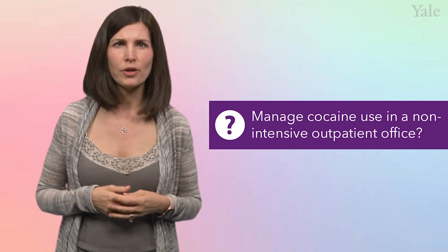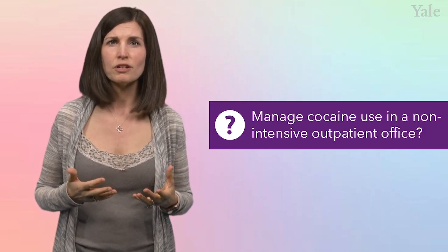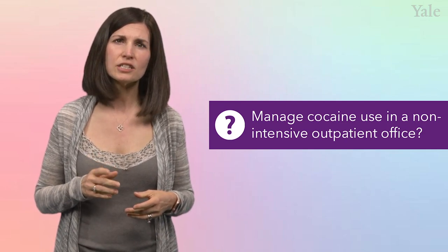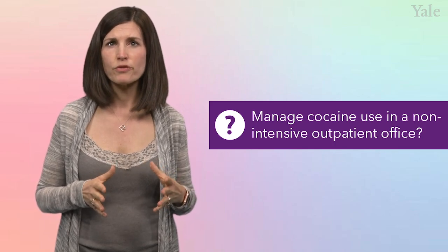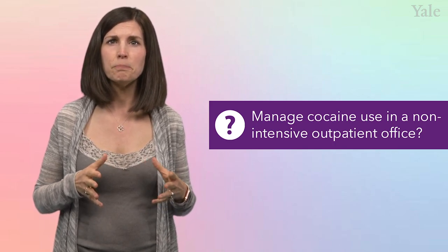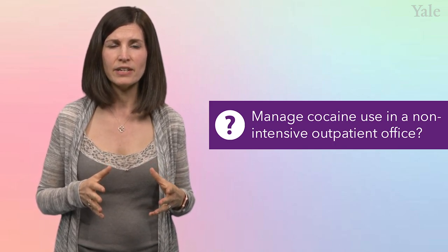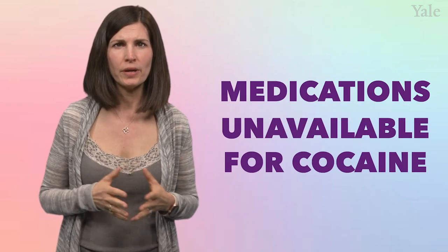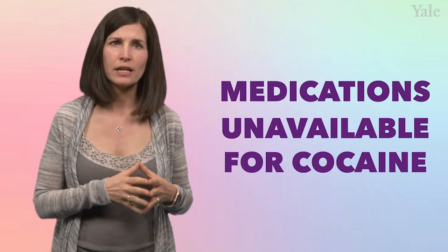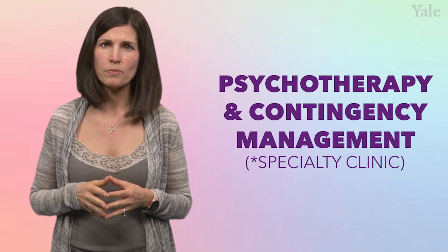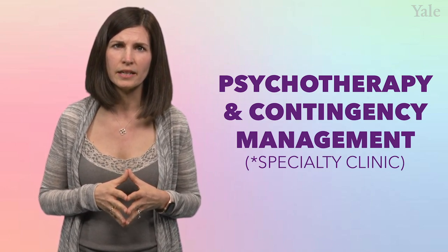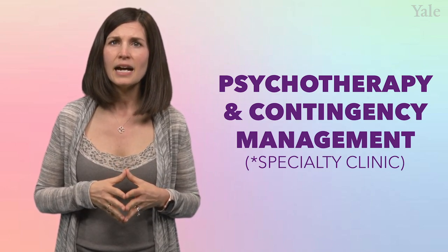I'd strongly recommend that Annabeth is going to need more than peer support alone if she's going to break the current cycle that she's in. What about simply managing her cocaine use in a regular, non-intensive outpatient office? In her case, she's using cocaine. Unlike medications for opiate use disorder, which can be immediately effective and life-saving and provided in an outpatient clinic, we don't have such treatments for cocaine use disorder. The primary treatments are psychotherapy and contingency management, both of which will need to be delivered in a substance use or general mental health specialty clinic. So again, I'd strongly recommend that outpatient treatment alone will not be enough.